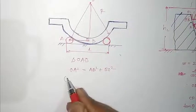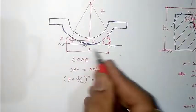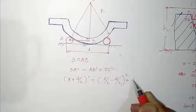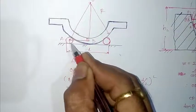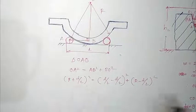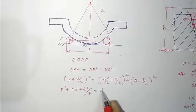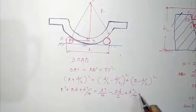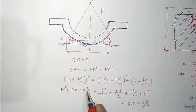Now AO is the radius capital R plus small d/2. So (R + d/2)² = AB² + BO². AB is (L/2 − d/2), and BO is (R − d/2). Expanding: R² + Rd + d²/4 = (L/2 − d/2)² + (R − d/2)². Expanding the right side: L²/4 − Ld/2 + d²/4 + R² − Rd + d²/4. Cancelling common terms R² and d²/4 from both sides, what remains is Rd on the left and −Rd on the right, giving 2Rd.